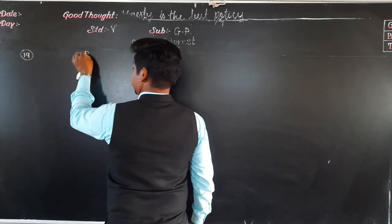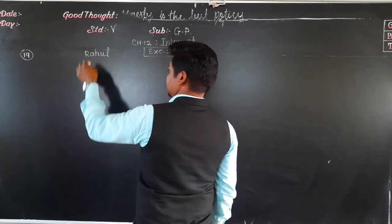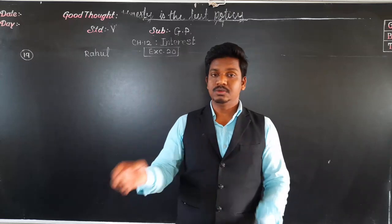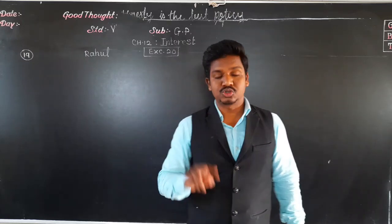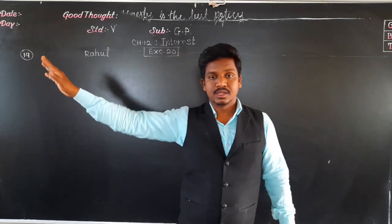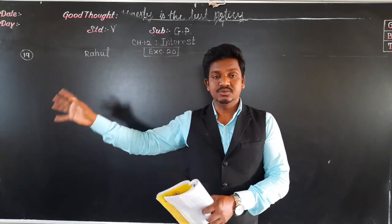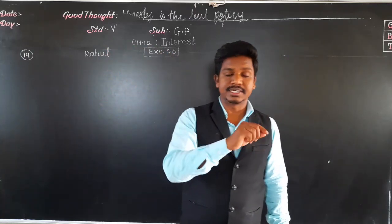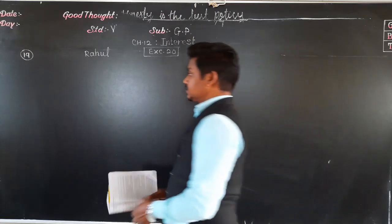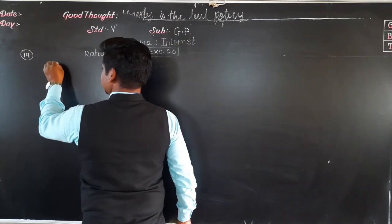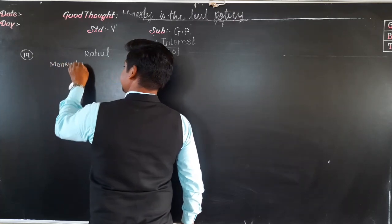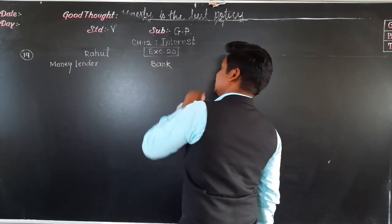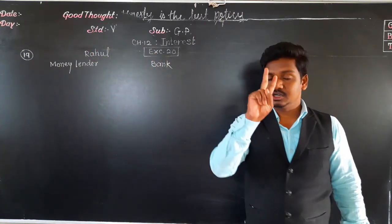He also borrowed rupees 2000 from a bank at 12% per annum. What sum of money should he pay in repaying both loans after 2 years? Rahul has borrowed money from two sources — one from a private money lender and another from the bank — in both cases for 2 years.